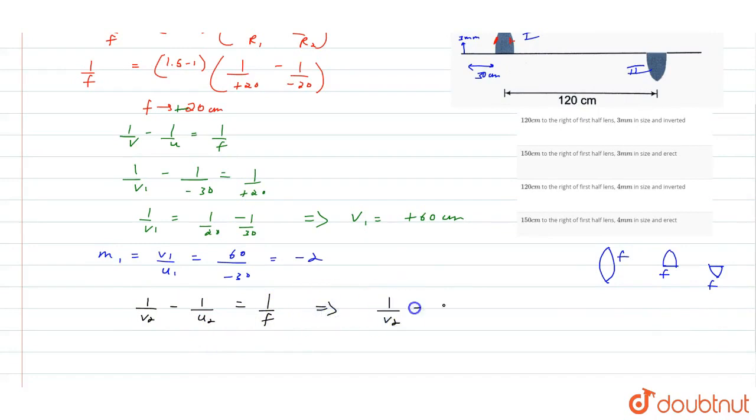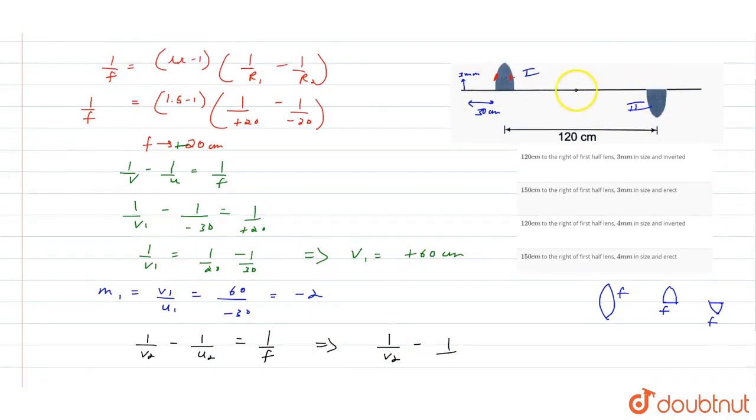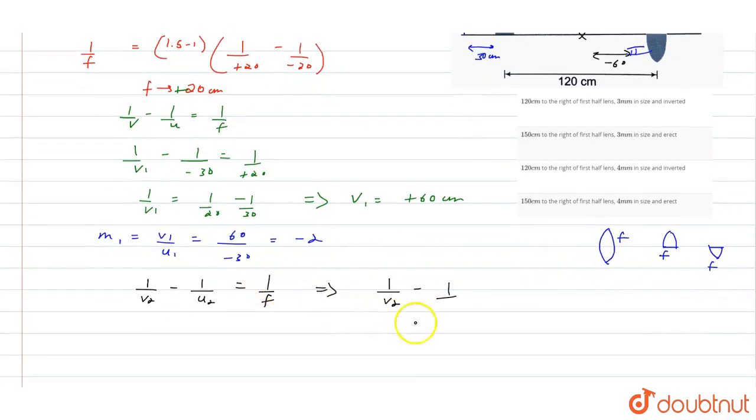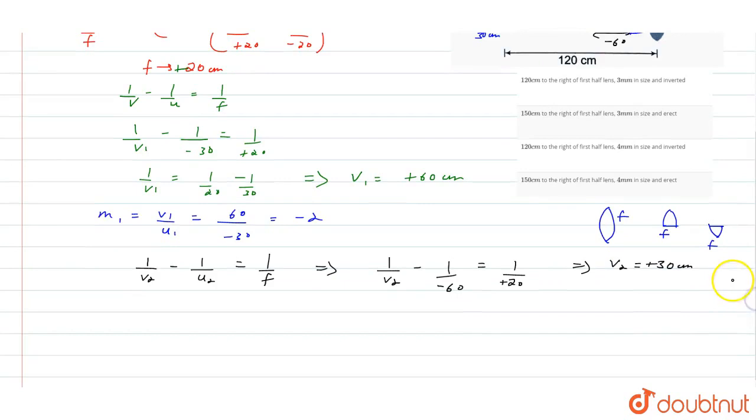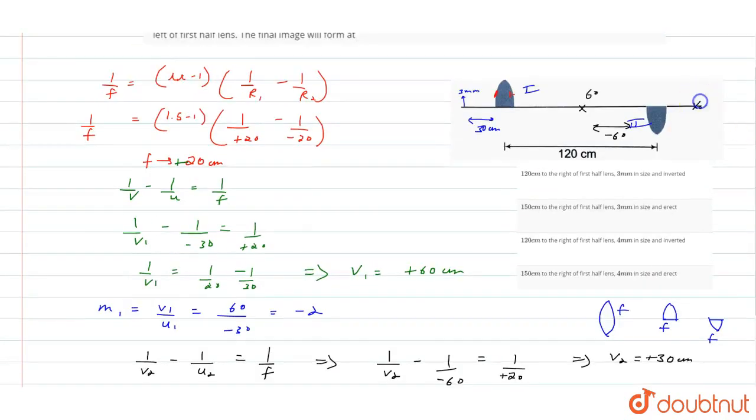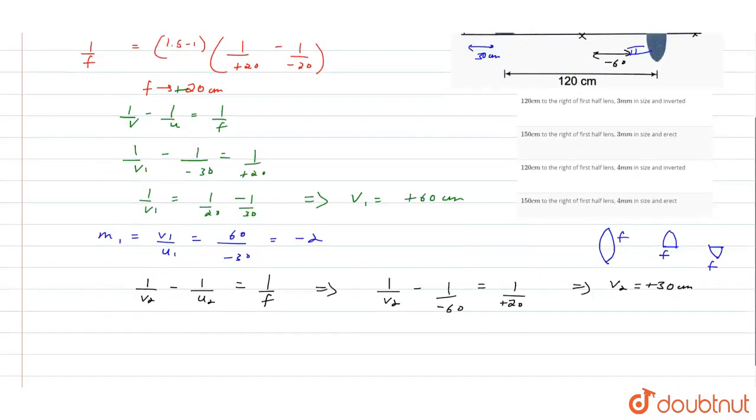1 by v2 minus 1 by u2, that is u2 is equal to v1 plus 60, is equal to 1 by f, that is 1 by 20. Now we have to solve the problem. This is v2 equal to 30 centimeter, plus 30. This is our v2. So we form something here, plus 30 centimeter.